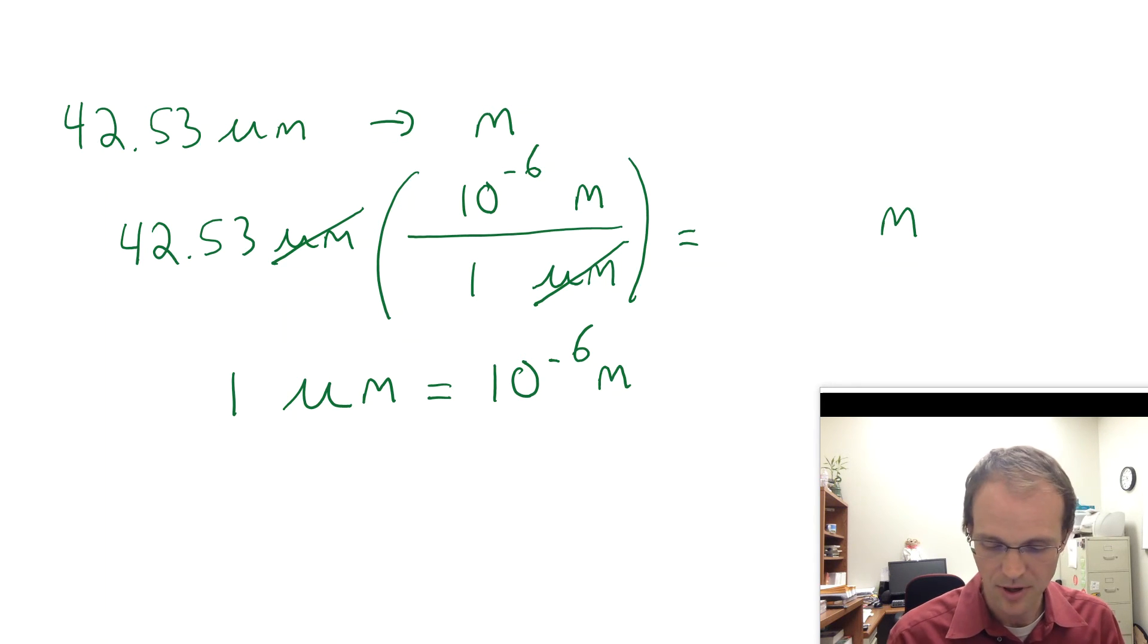And then if you type all that out in your calculator, you should get 4.253 times 10 to the minus 5 meters. And that's what we get in that case, multiplying it out.